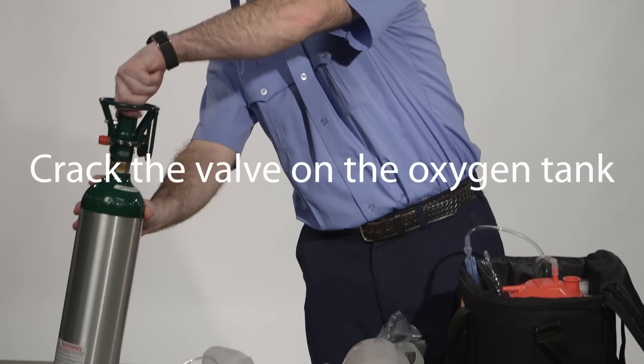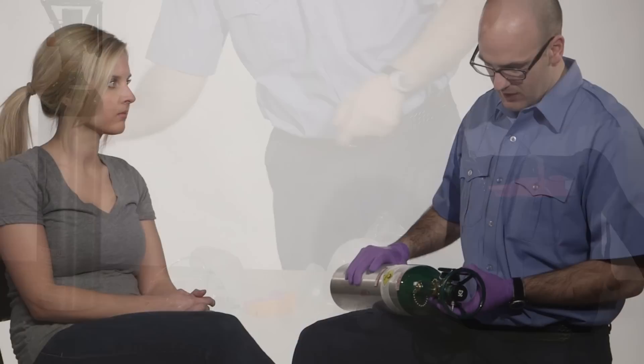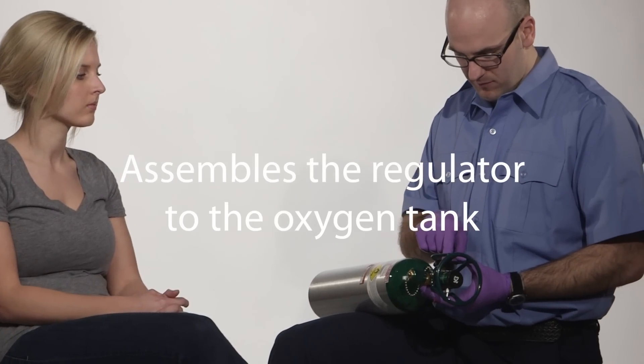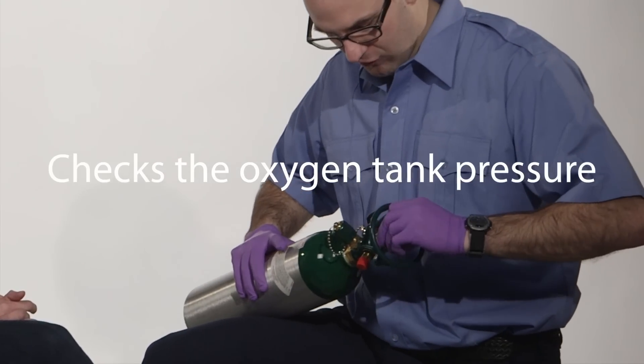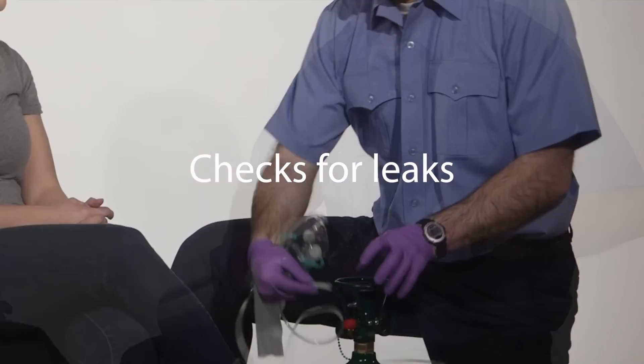Crack the valve on the oxygen tank. Assemble the regulator to the oxygen tank. Open the oxygen tank valve. Check the oxygen tank pressure and check for leaks.